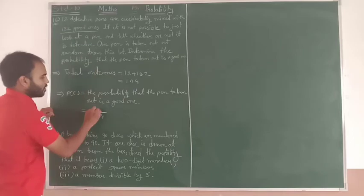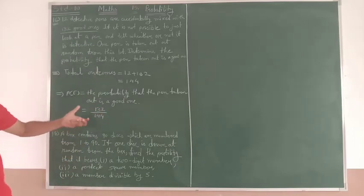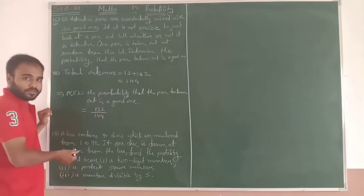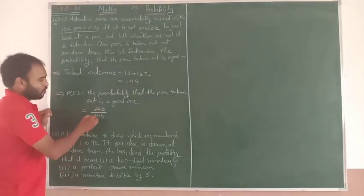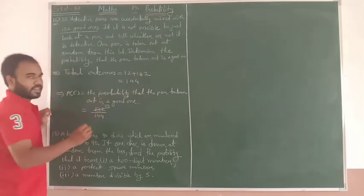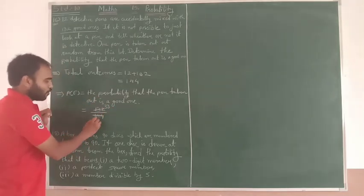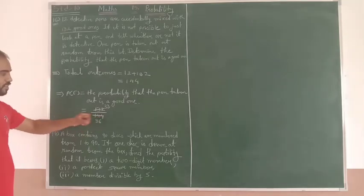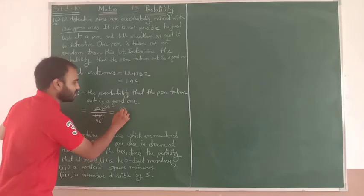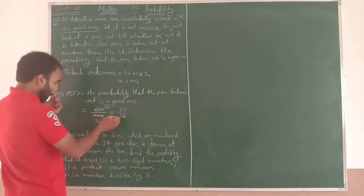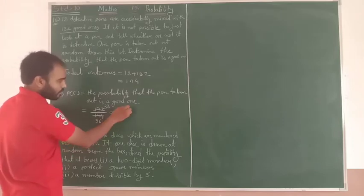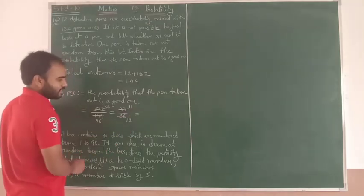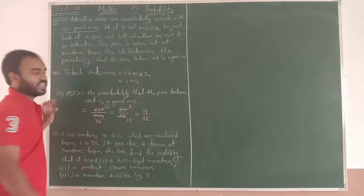So 132 by 144. Now we can factorize it. So I could write 4 times 3 is 11. 4 times 3 is 11. This is number 3. And here, 4 times 3 is 11 and 4 times 6 is 11. The answer is 11 by 12.